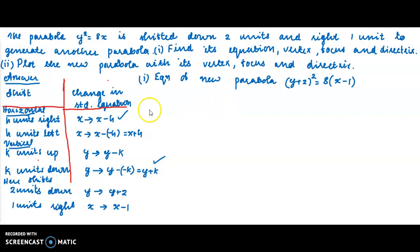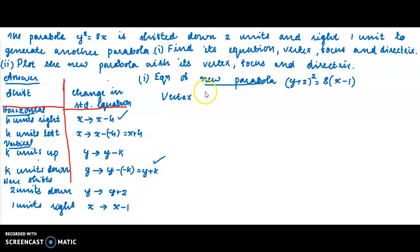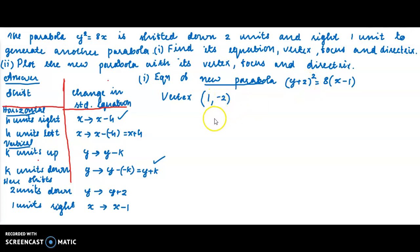Now we find the vertex, focus, and directrix of the new parabola. From the substitution, x is replaced by x minus 1 and y by y plus 2, so the vertex of the new parabola is (1, −2).